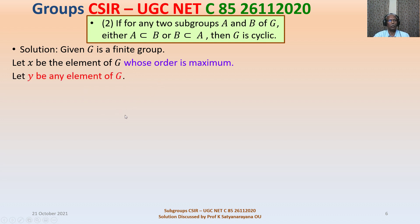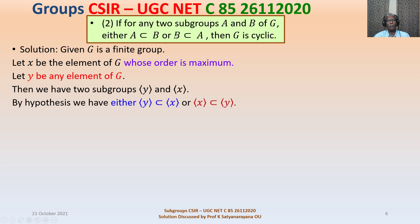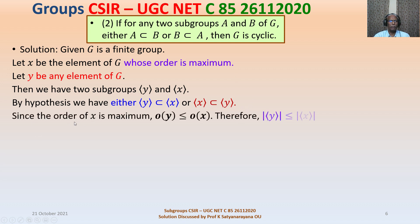Let Y be an arbitrarily chosen element of G. Then we have two cyclic subgroups: ⟨Y⟩ and ⟨X⟩. By hypothesis, either ⟨Y⟩ is contained in ⟨X⟩ or ⟨X⟩ is contained in ⟨Y⟩. Since the order of X is maximum, the order of Y is less than or equal to the order of X, so the order of ⟨Y⟩ is less than or equal to the order of ⟨X⟩.